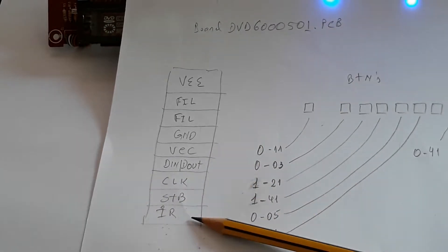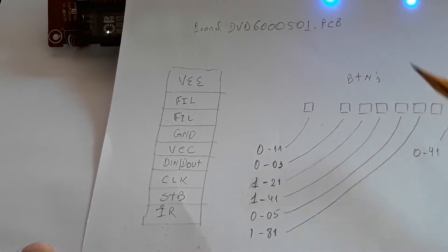After you have a clock, strobe, and also you have a pin for the infrared if you want to use. Okay, the codes for the keyboard.